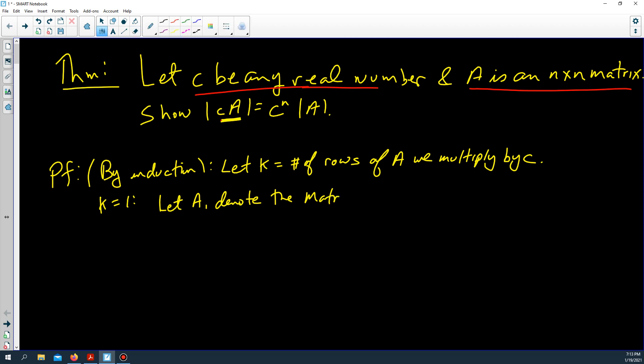Let A denote the matrix determined by multiplying all rows less than or equal to one by c. A sub seven would mean that we took matrix A and we multiplied rows one through seven by c and we didn't change rows eight, nine, and ten.